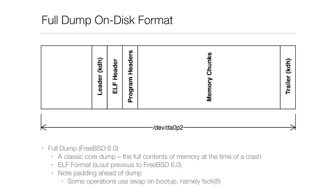This is a classic core dump — the full contents of memory at the time of the crash — so these can be as large as your RAM. They're in ELF format, just a binary. Previous to FreeBSD 6.0 they were in a.out format.